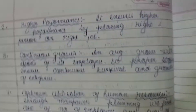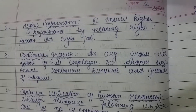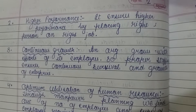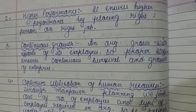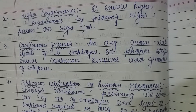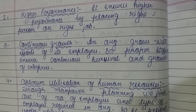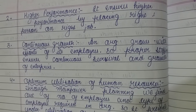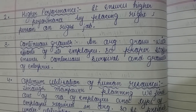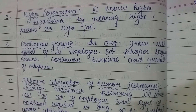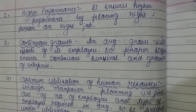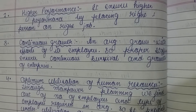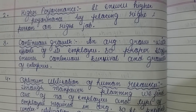Number two: higher performance. It ensures higher performance by placing the right person on the right job. Staffing ensure करता है — हमें higher performance कैसे मिलती है? जब हम right job पर right people को proper recruitment and selection के through organization का part बनाते हैं. Employees are given a place according to their qualification.